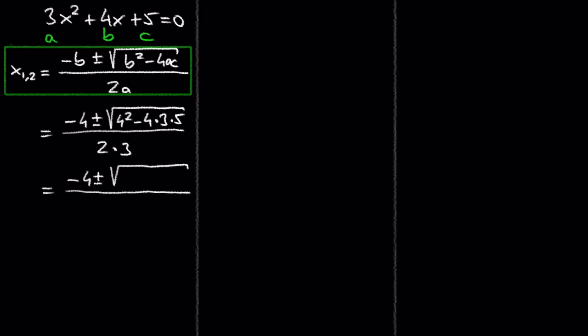4 squared is 16, and 4 times 3 is 12, times 5 is 60. 2 times 3 is 6. 16 minus 60 is negative 44.